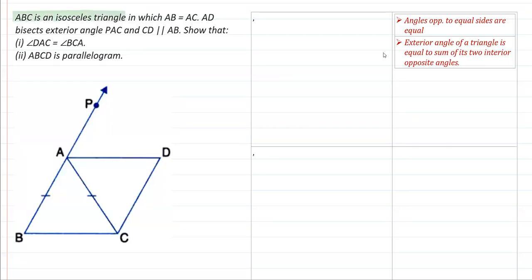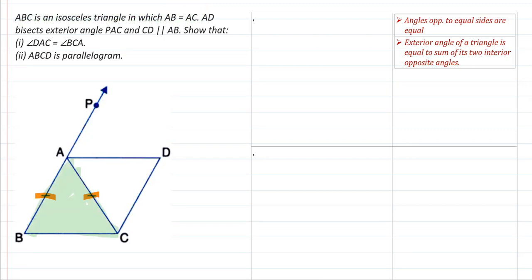The question says ABC is an isosceles triangle where AB is equal to AC. AD bisects the exterior angle PAC, so AD is the bisector of angle PAC. That means the two parts of this angle are equal.